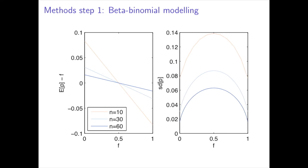As you can see on the right figure, the beta-binomial model yields large variances for small sequencing depths, which are denoted by the letter N in these figures. Hence, we can include more uncertainty in our GP models when the coverage is low.